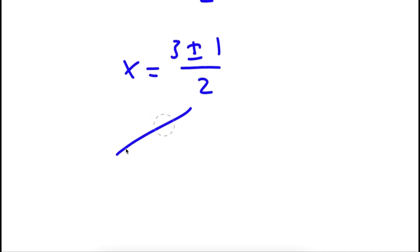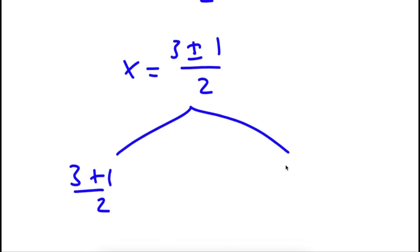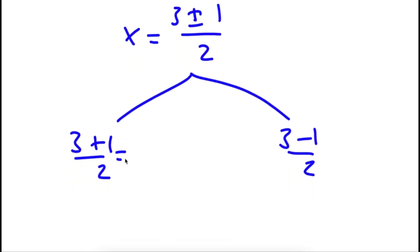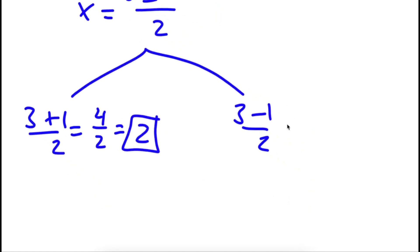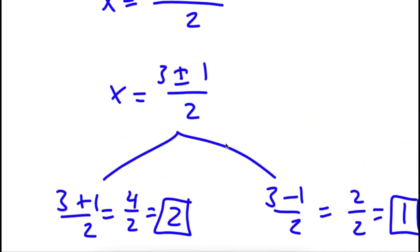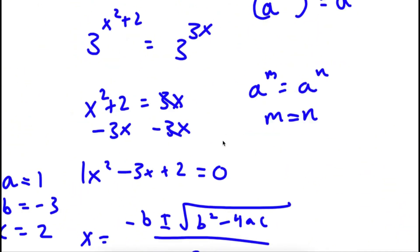Now this gives me two equations. I have 3 plus 1 over 2, and I also have 3 minus 1 over 2. So for 3 plus 1 over 2, this is equal to 4 over 2, which is simply equal to 2. For 3 minus 1 over 2, this is equal to 2 over 2, which is equal to 1. So 2 and 1 are my values for x.